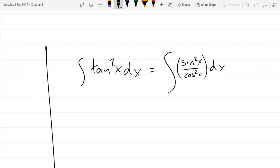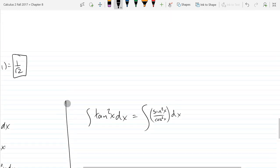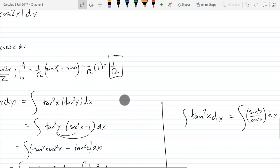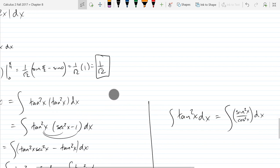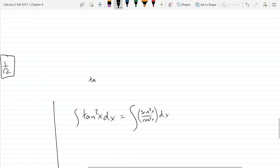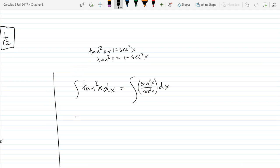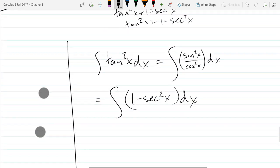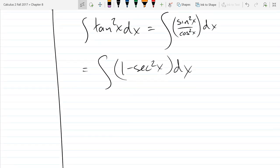So there's a tangent squared plus one equals secant squared, so let's use that and we'll just solve for tangent squared. So we got tan squared plus one equals secant squared, so tan squared is secant squared minus one. This is way better, I know the antiderivative secant squared, maybe you do too.